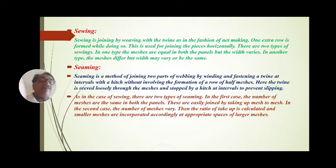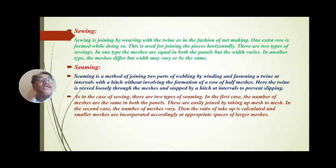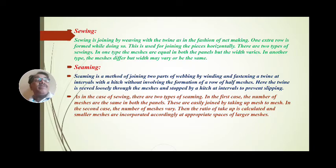The second method is sieving. Sieving is a method of joining two parts of webbing by winding and fastening a twine at intervals with a hitch, without involving the formation of a row of half meshes. The twine is passed loosely through the meshes and stopped by hitch at intervals to prevent the meshes from slipping.